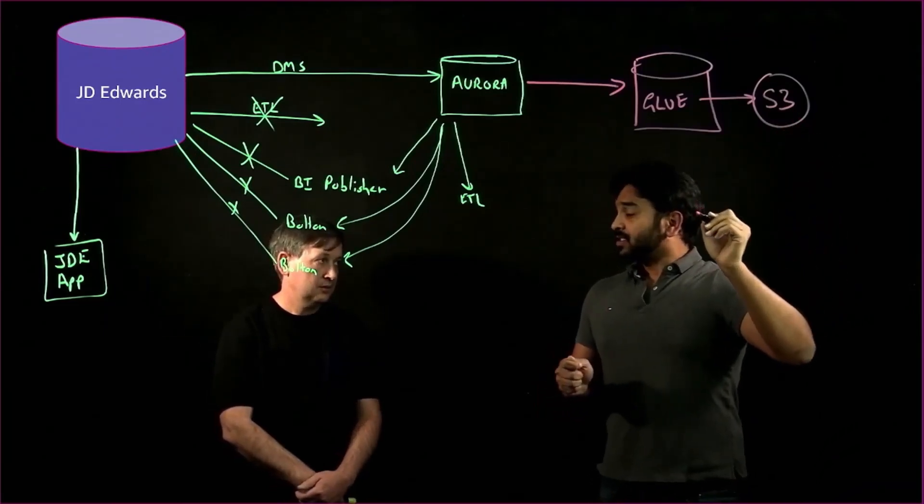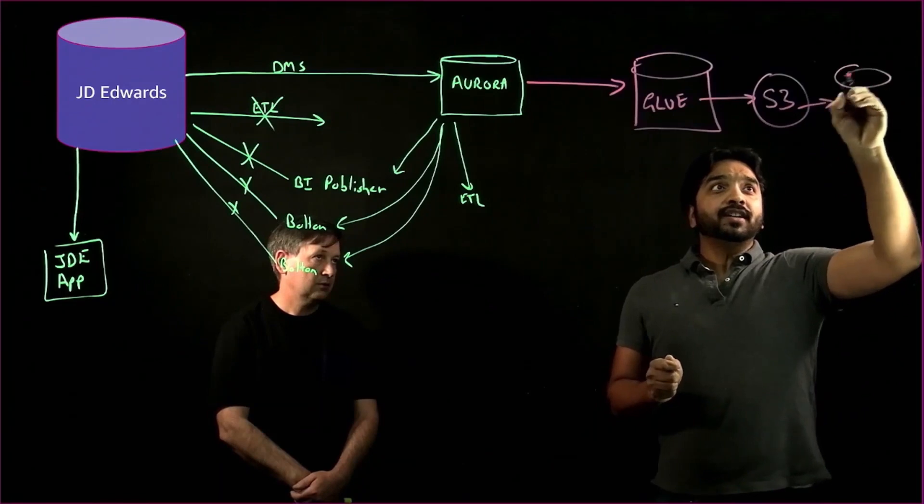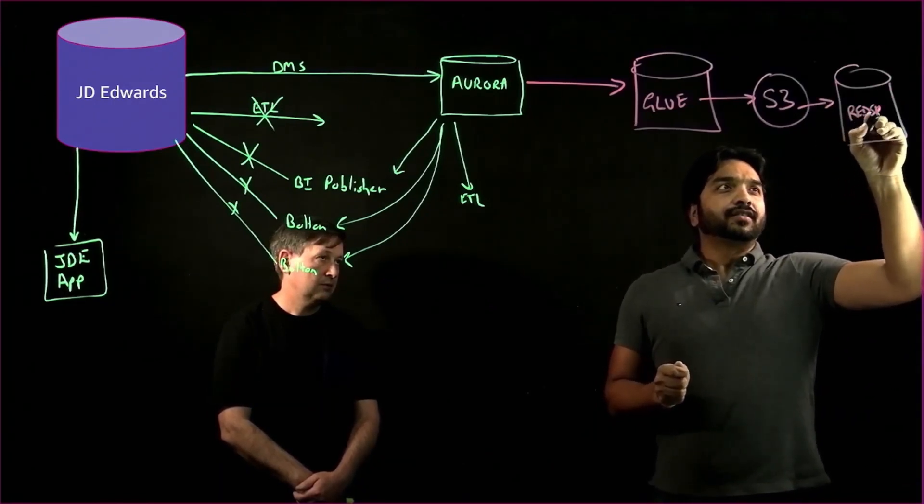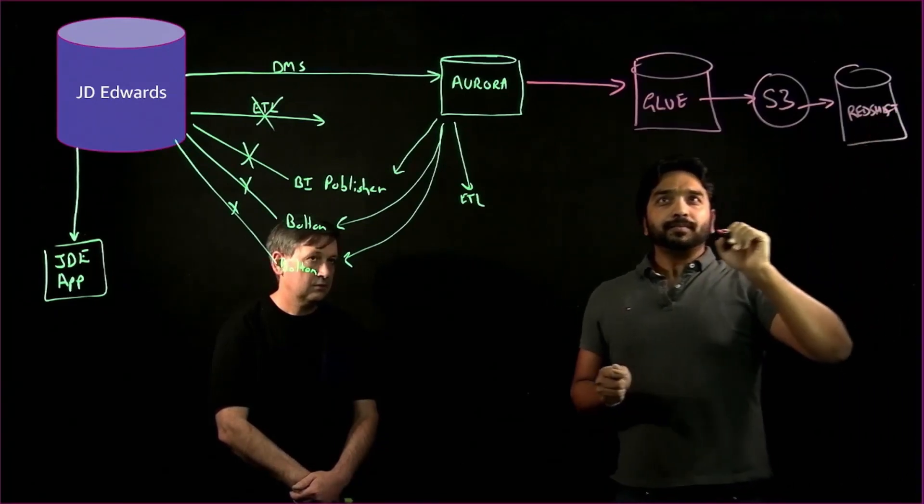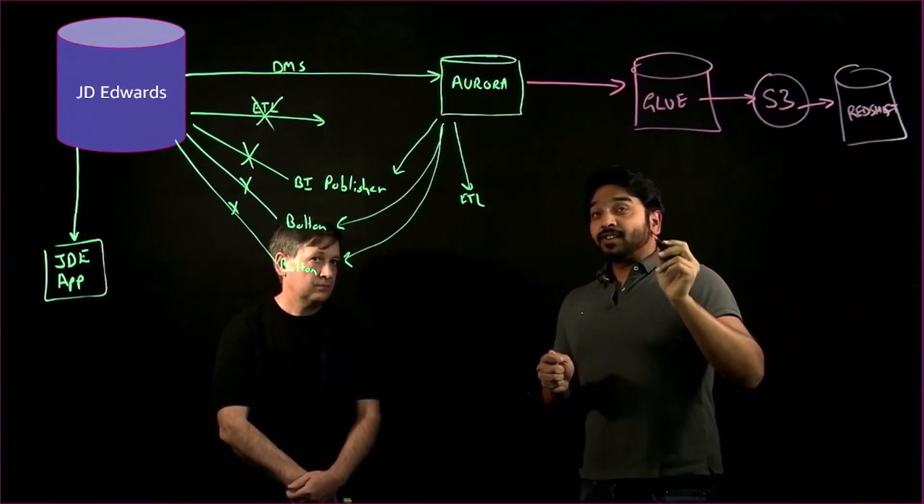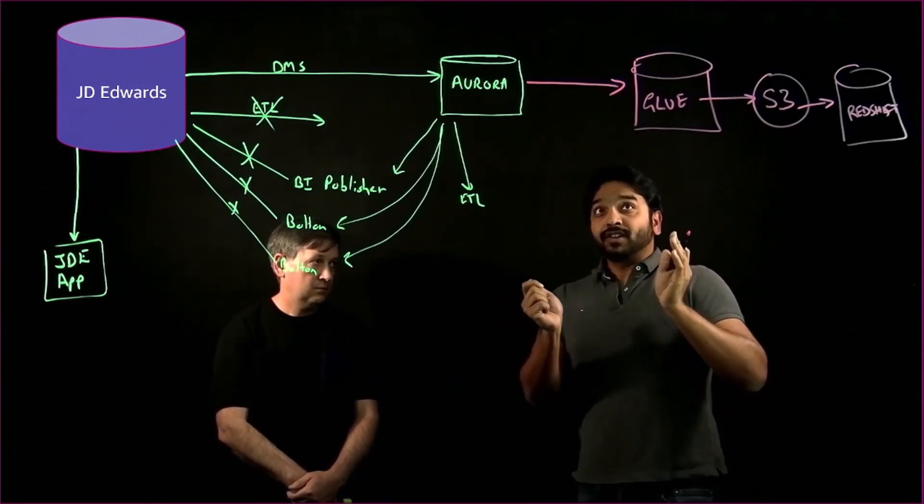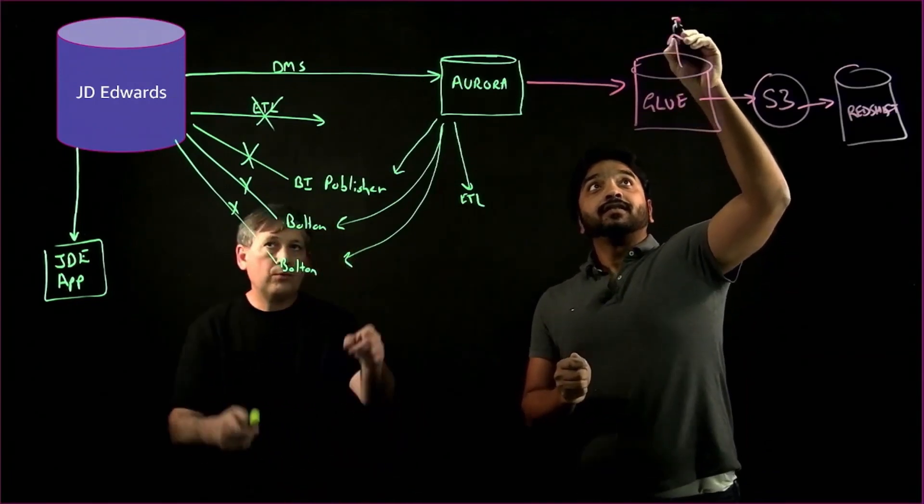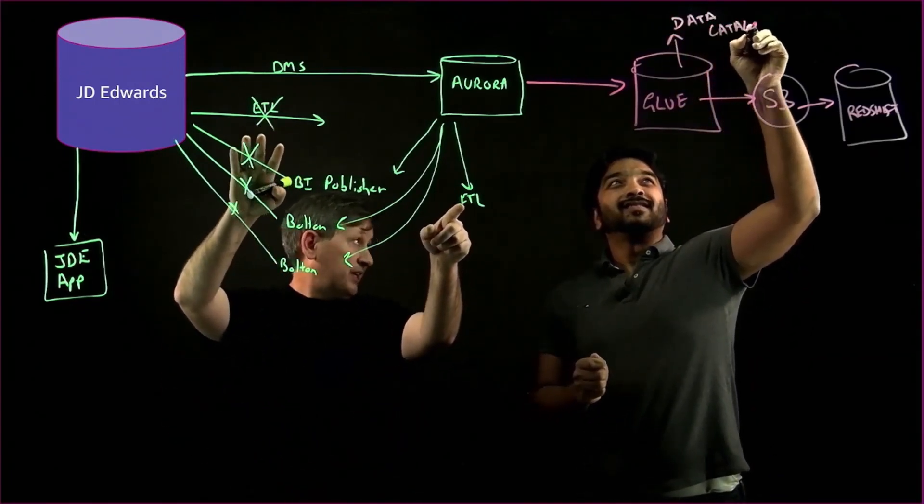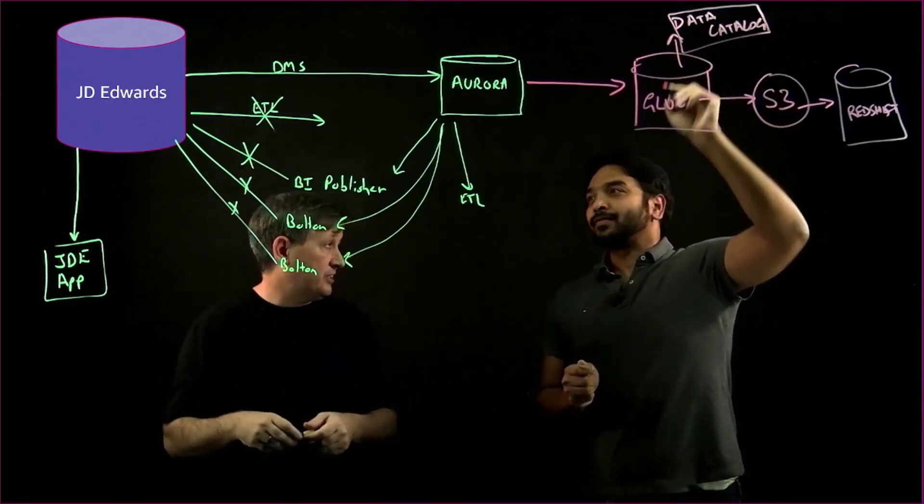And from S3, there are some native connectors that can be used to move the data into Amazon Redshift. And by the way, Glue also doubles up as a service that provides the data catalog for our customers out of the box. So when I'm talking about ETL here, Glue is a potential replacement for some of our older ETL solutions that are hitting JD Edwards today.